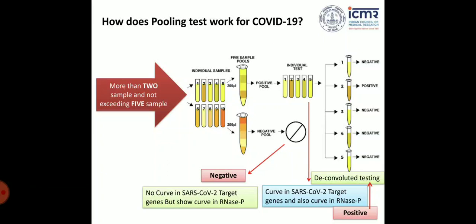Please remember you should not pool more than five samples. This is very important. When you pool more than five samples, you are really diluting the viral load and going beyond the limit of detection of real-time PCR. Any test — whether ELISA or any other — has a real limit of detection, and we want to make our test as stringent as possible. So WHO and ICMR recommend pooling more than two but not exceeding five samples.